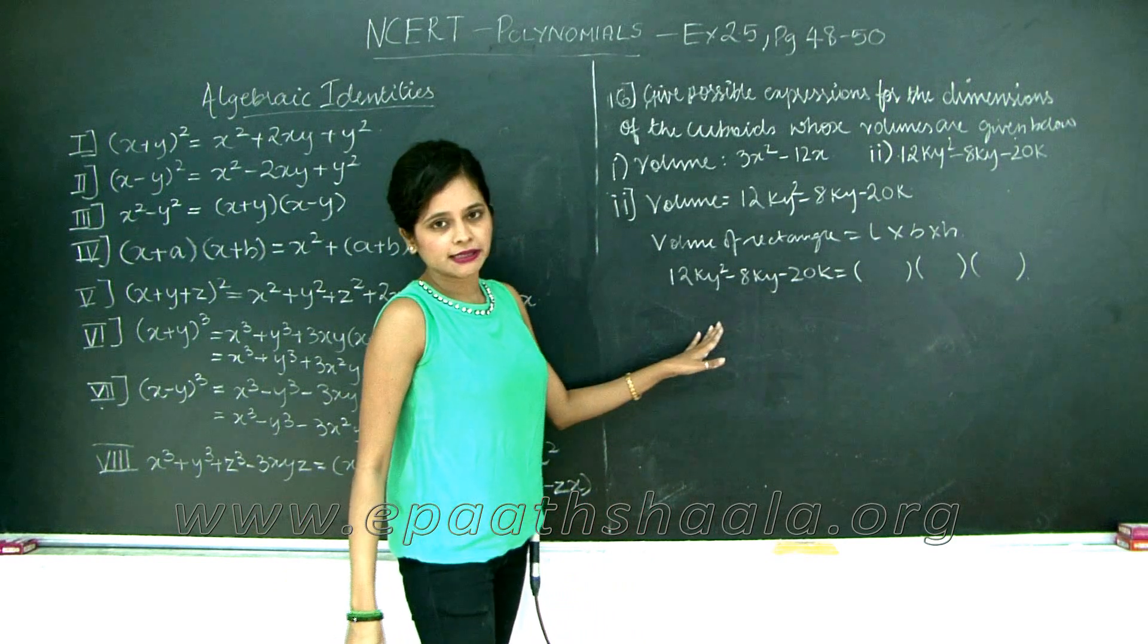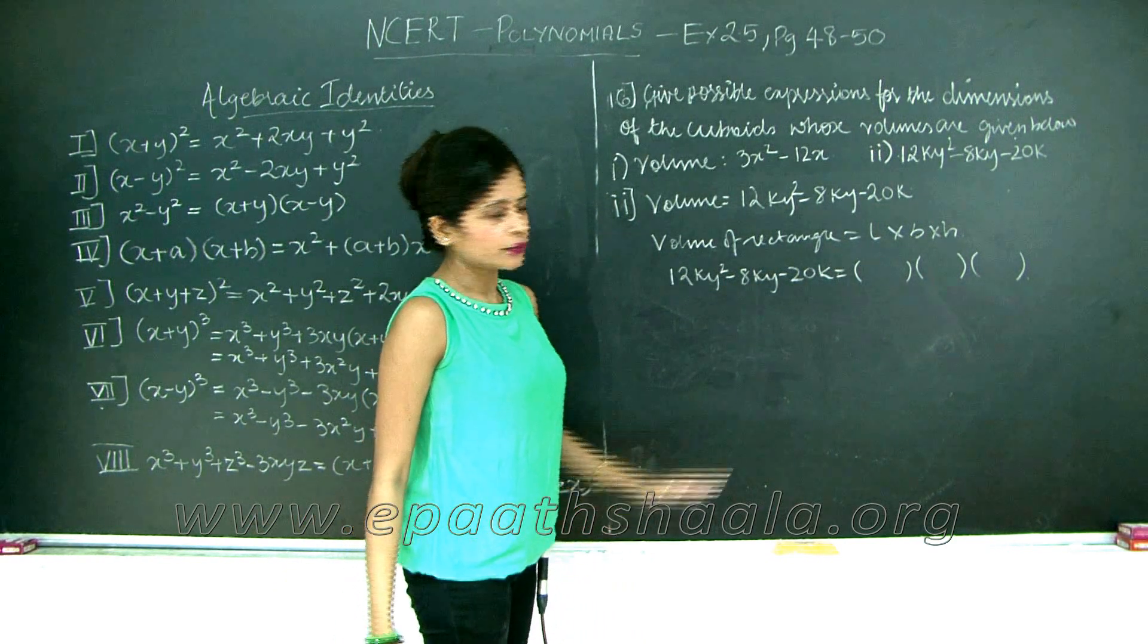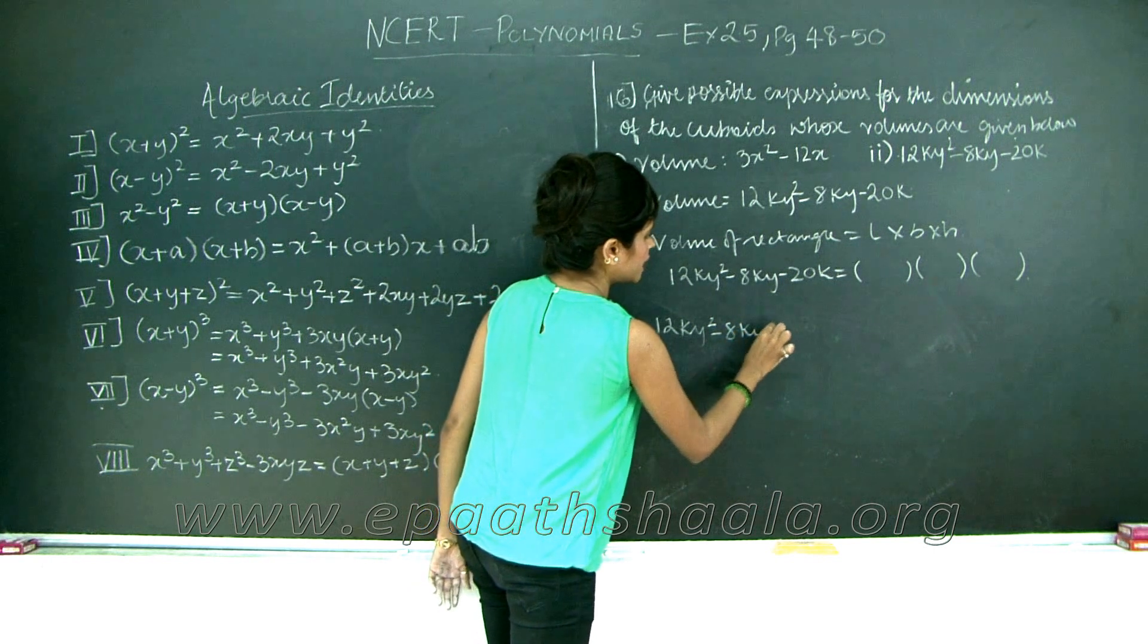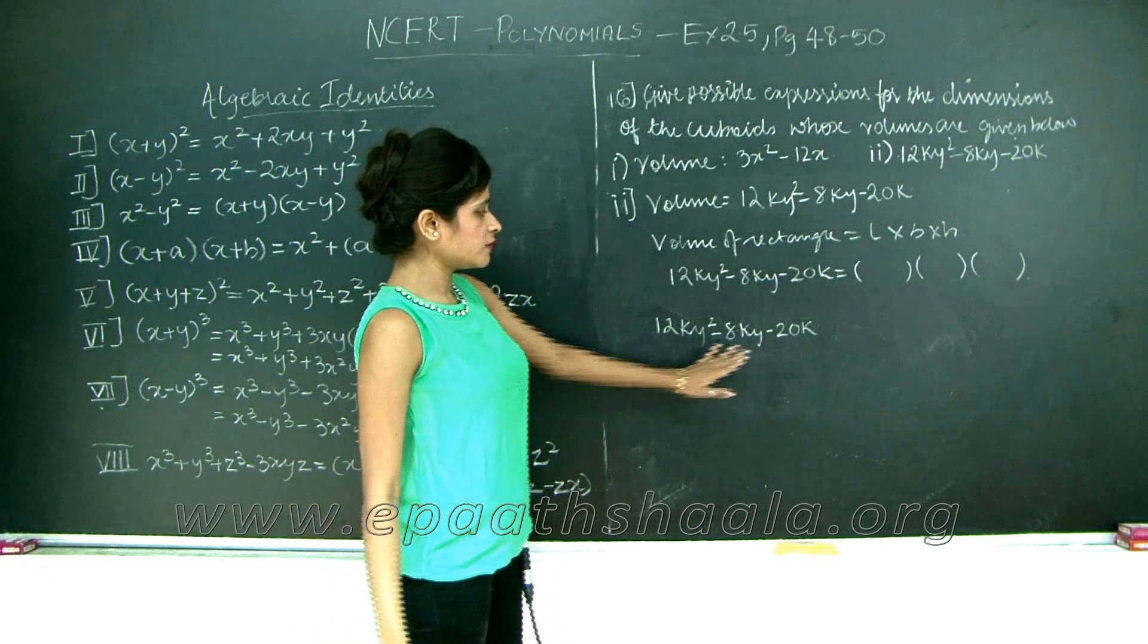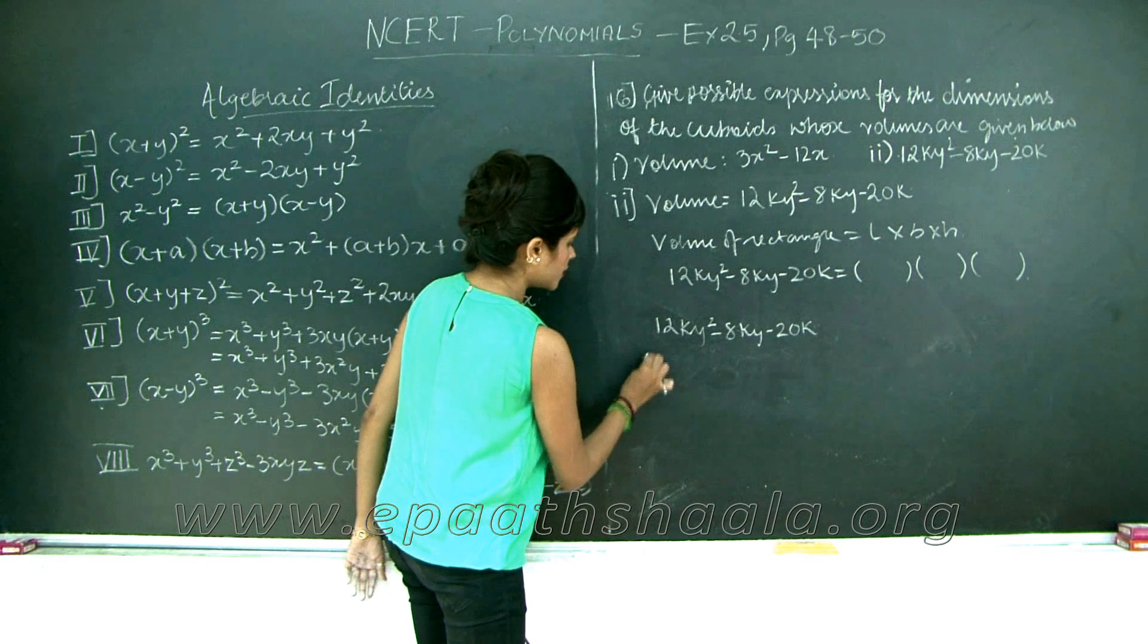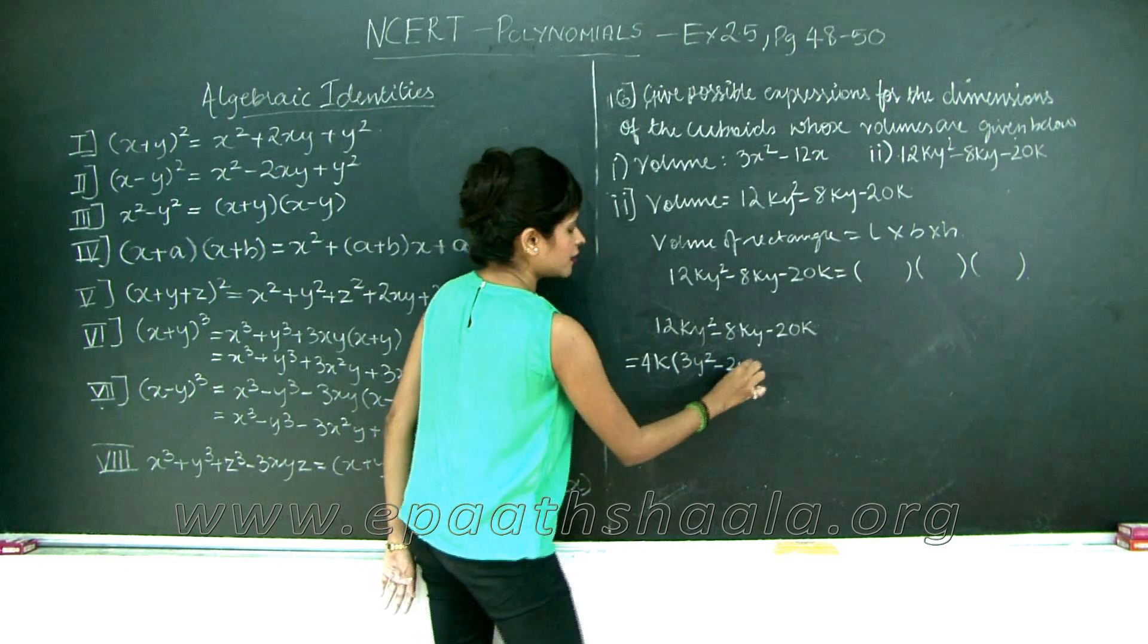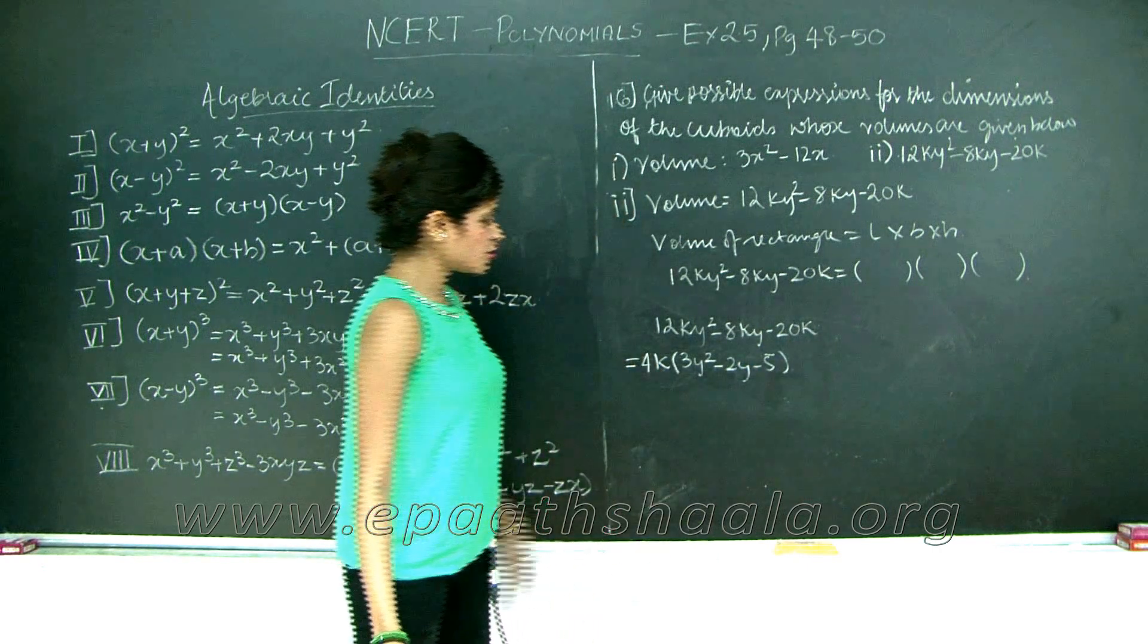Let's go ahead and factorize this because factorizing it will give us products of the factors which is what we need. 12ky square minus 8ky minus 20k. What is common in between these terms? One we have k and the other one is 4. So I take 4k common outside. 4k gives me 3y square minus 2y minus 5. So I got one term.